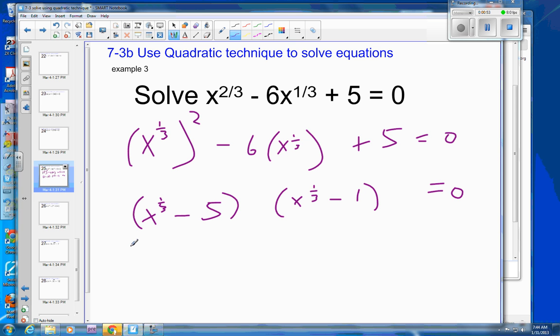And then from there, I can use the fact that when you multiply two numbers together and they're equal to 0, one of them has to be 0, the zero property. And so that makes this x to the one-third minus 5 equal to 0. So that makes this x to the one-third equal to a positive 5.